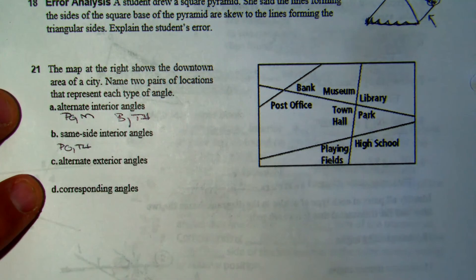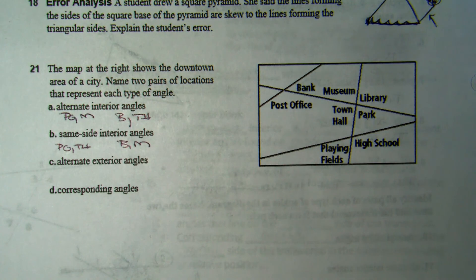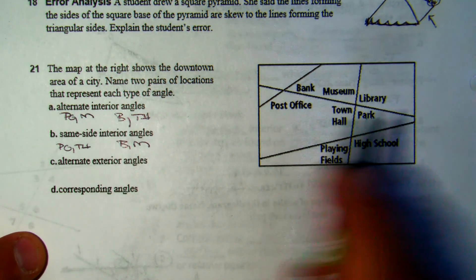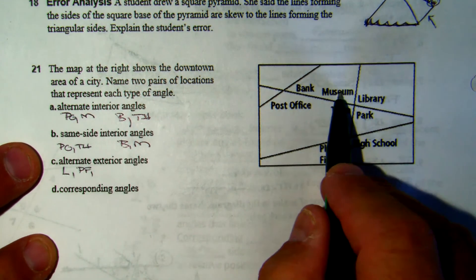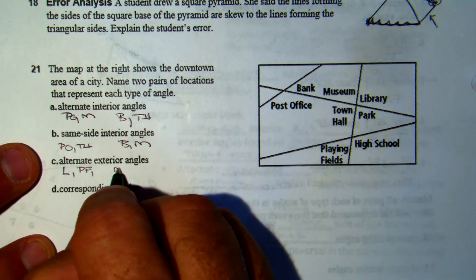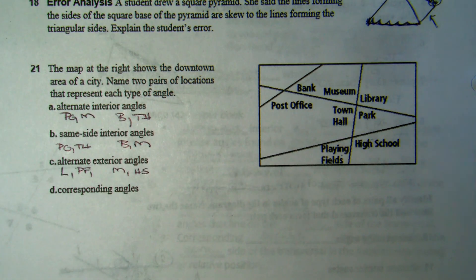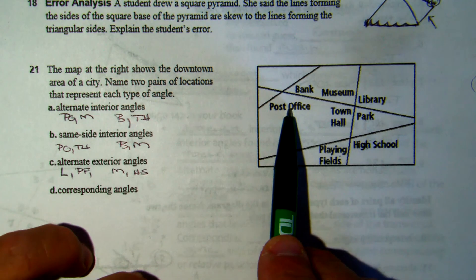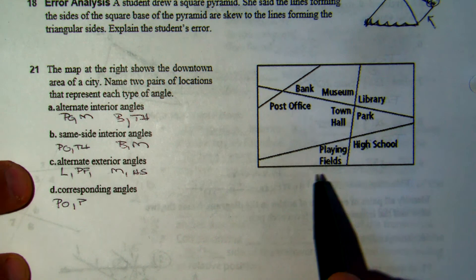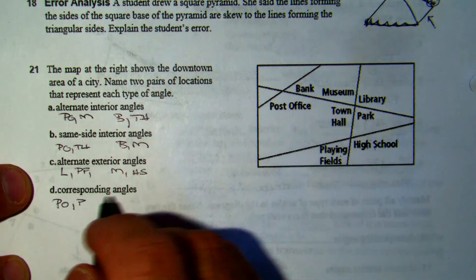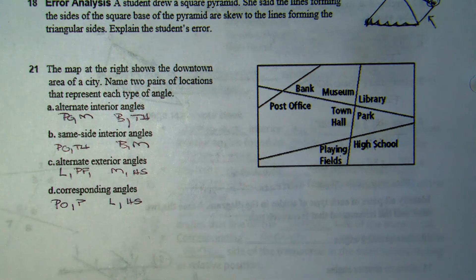Same side interior: now the post office goes with the town hall because they're on the same side, and the bank goes with the museum. Alternate exteriors: the library and the playing fields form one pair; the museum and the high school form another. Corresponding angles: the post office and park are both lower right; the library and high school are both upper right.